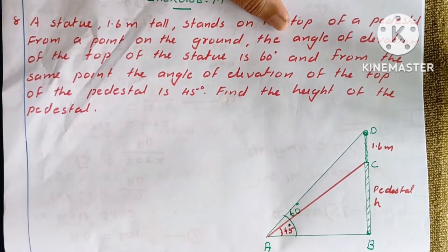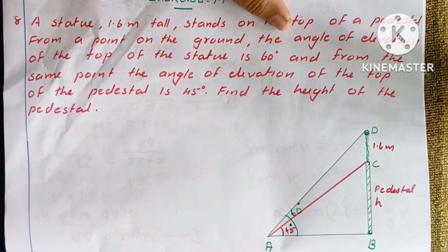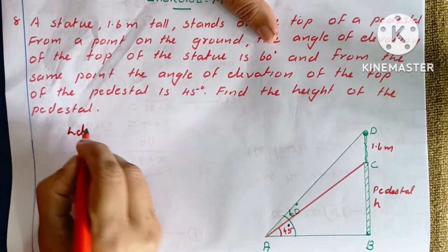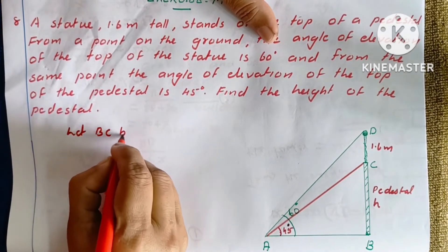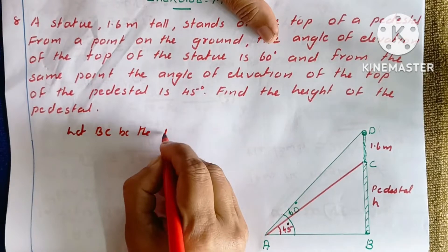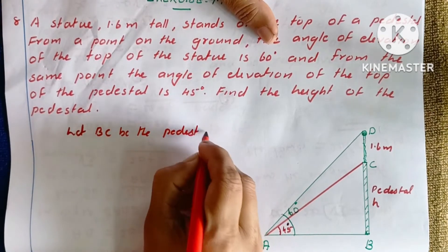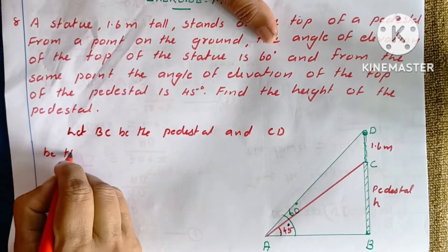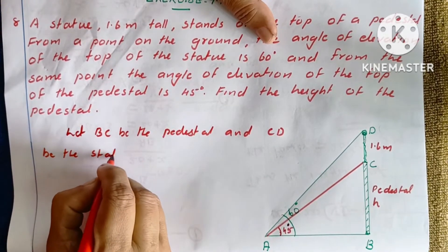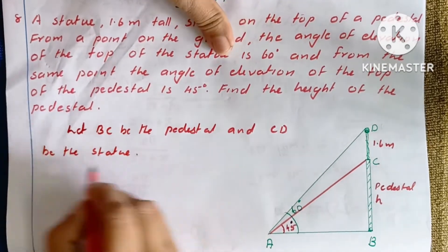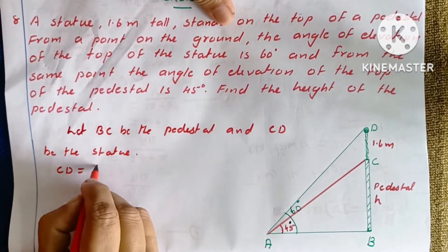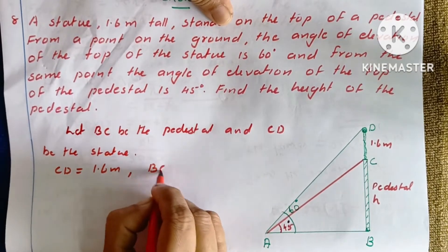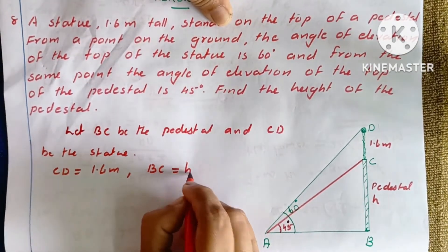This question is solved using the pedestal. Let BC be the pedestal and CD be the statue. CD is equal to 1.6 meters. Let BC length equal h.